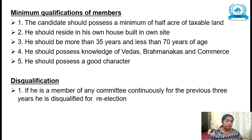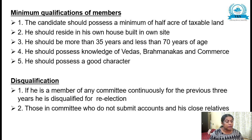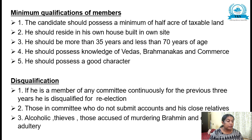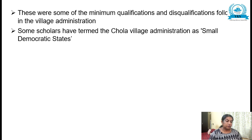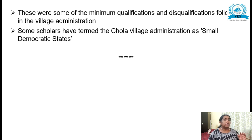Disqualifications included: if a member had served in any committee continuously for the previous three years, he was disqualified for re-election. Those in committee who did not submit accounts, and their close relatives, alcoholics, thieves, those accused of murdering a Brahmin, and those committing adultery were also disqualified. Some scholars have termed Chola village administration as a small democratic state.